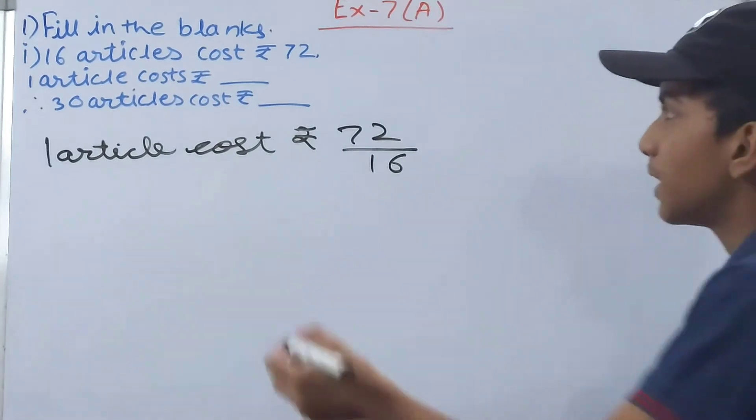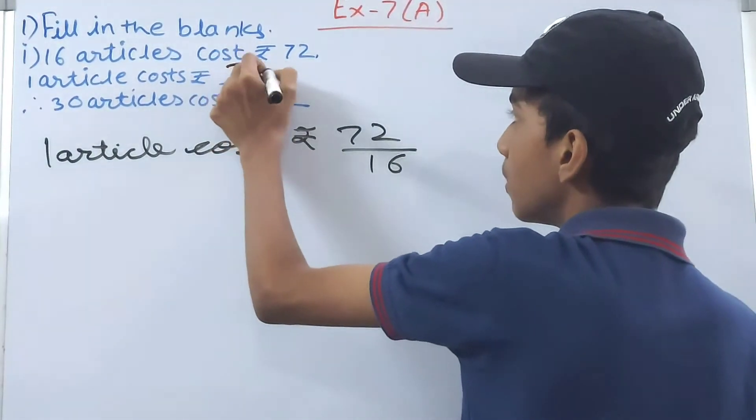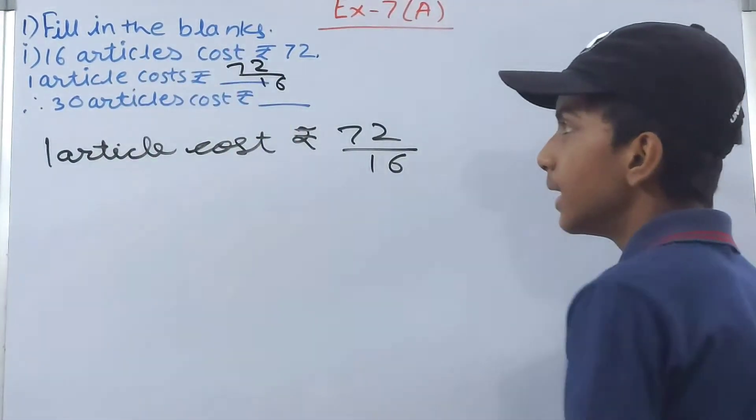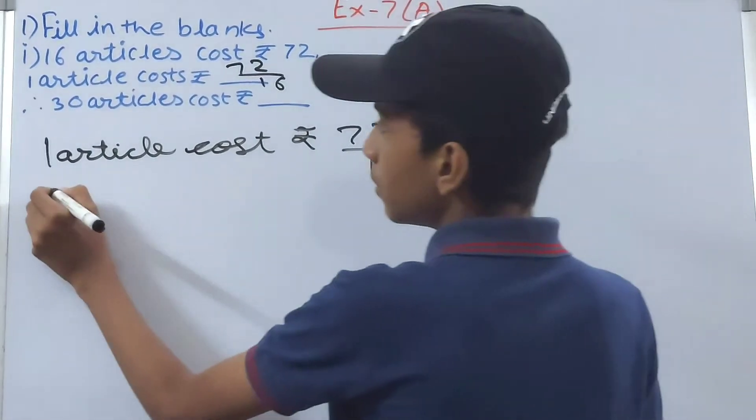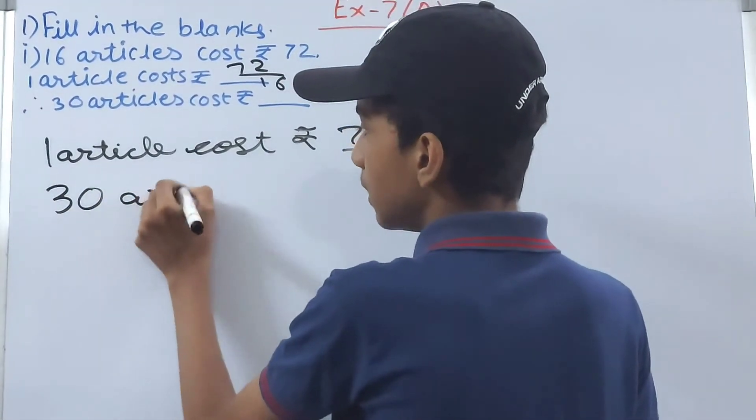You can solve this. I'll just write it like this: 72 upon 16. Then 30 articles will cost how many rupees? So 30 articles cost rupees...